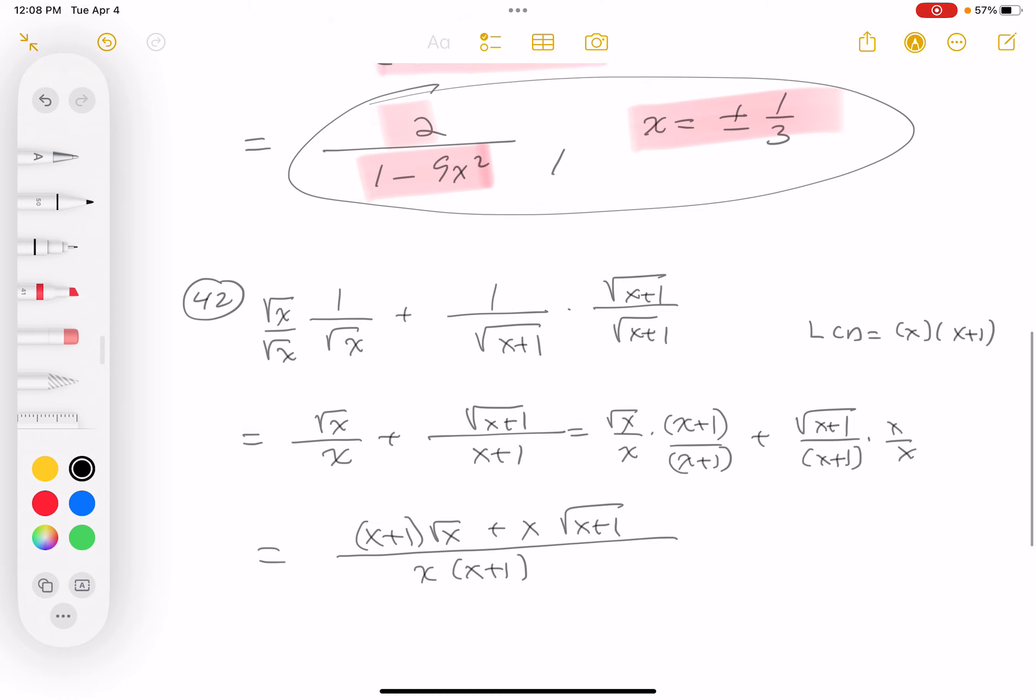Now what are the conditions on this problem? Looking at the original problem with these two terms, the x has to be greater than 0. Number one reason, you can't divide by 0, and the root has got to be non-negative. And here, x has got to be greater than minus 1. This is a more strict condition. So the condition is x must be greater than 0.